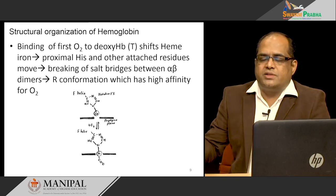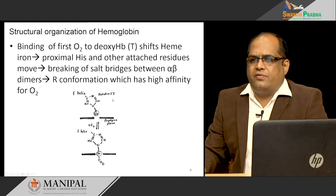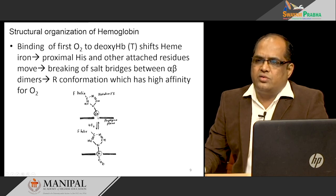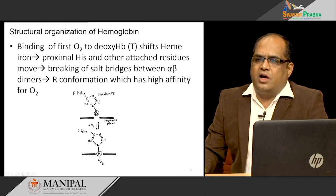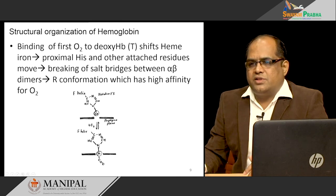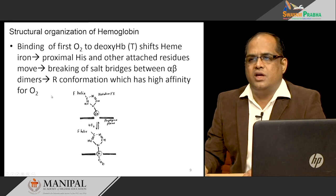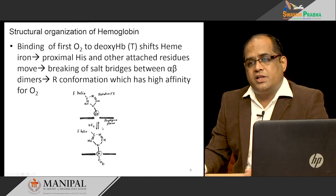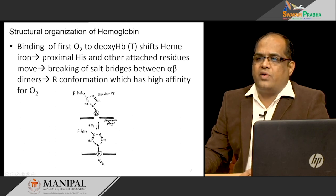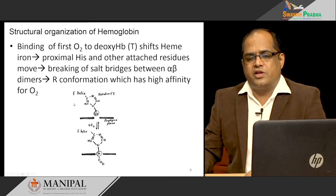How does oxygen binding help in cooperative binding, and what conformational changes does it cause? When the first oxygen binds to the iron at the F8 proximal histidine, it pulls the iron molecule into the plane of the porphyrin ring. This causes the breaking of the salt bridges, which brings about a conformational change in the hemoglobin molecule — converting more of the T form into R form with high affinity for oxygen. The proximal histidine and other residues move into the plane of the porphyrin ring, breaking the salt bridges and converting T form into R form. Once the oxygen is delivered, it goes back into the T form.